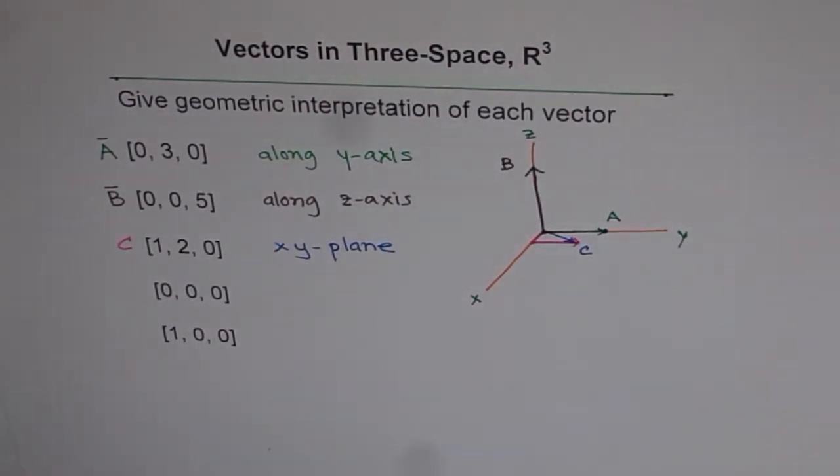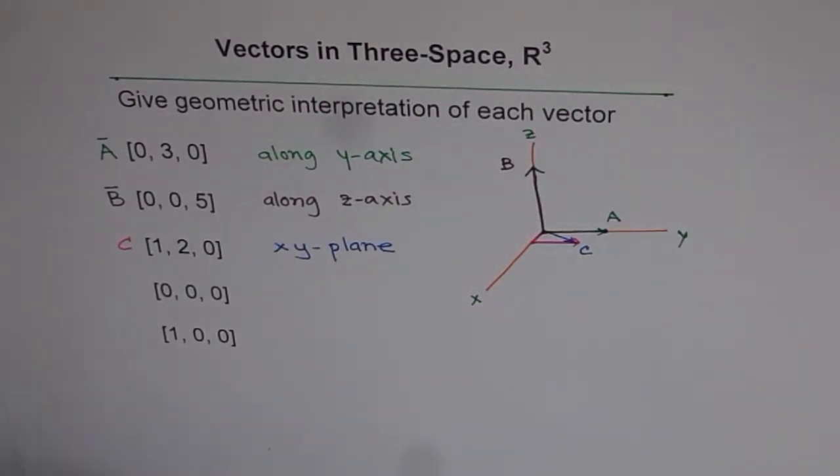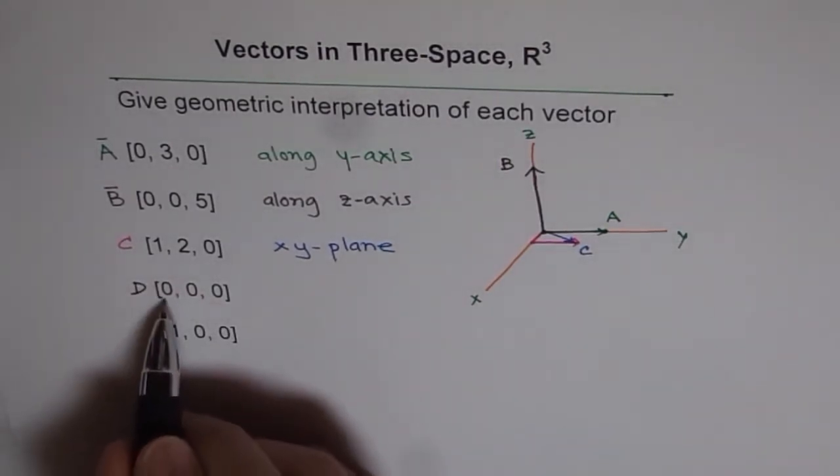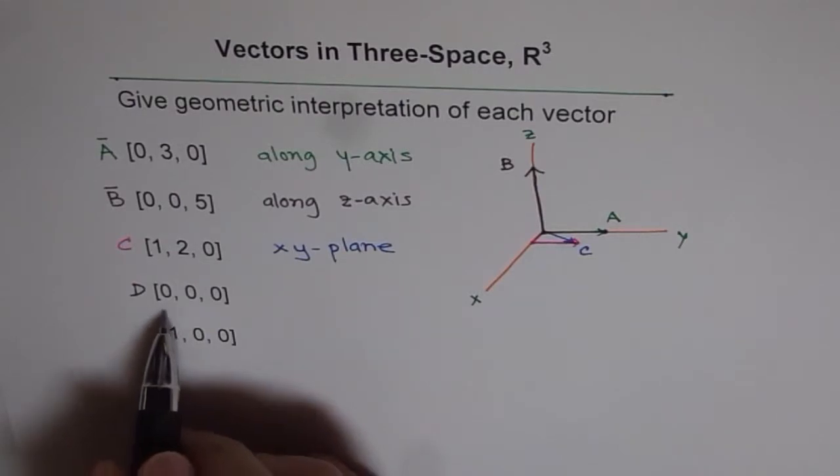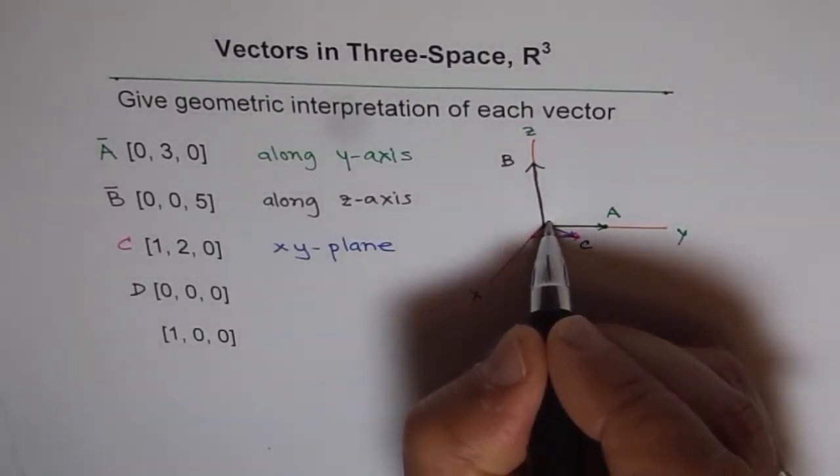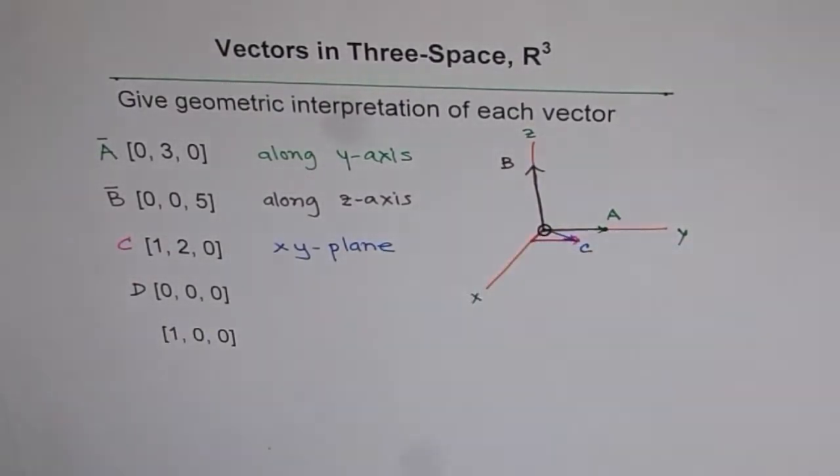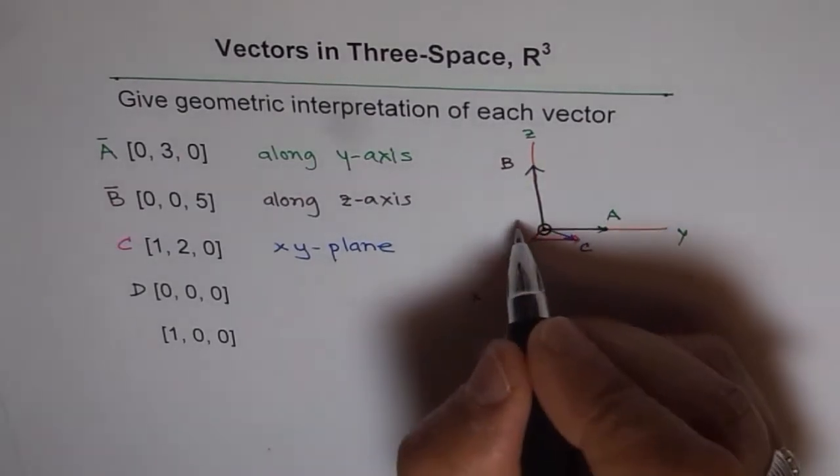Now let's talk about vector D. Vector D is (0, 0, 0), it's a zero vector, and what is the location? It is right at the origin. So that is our vector D.